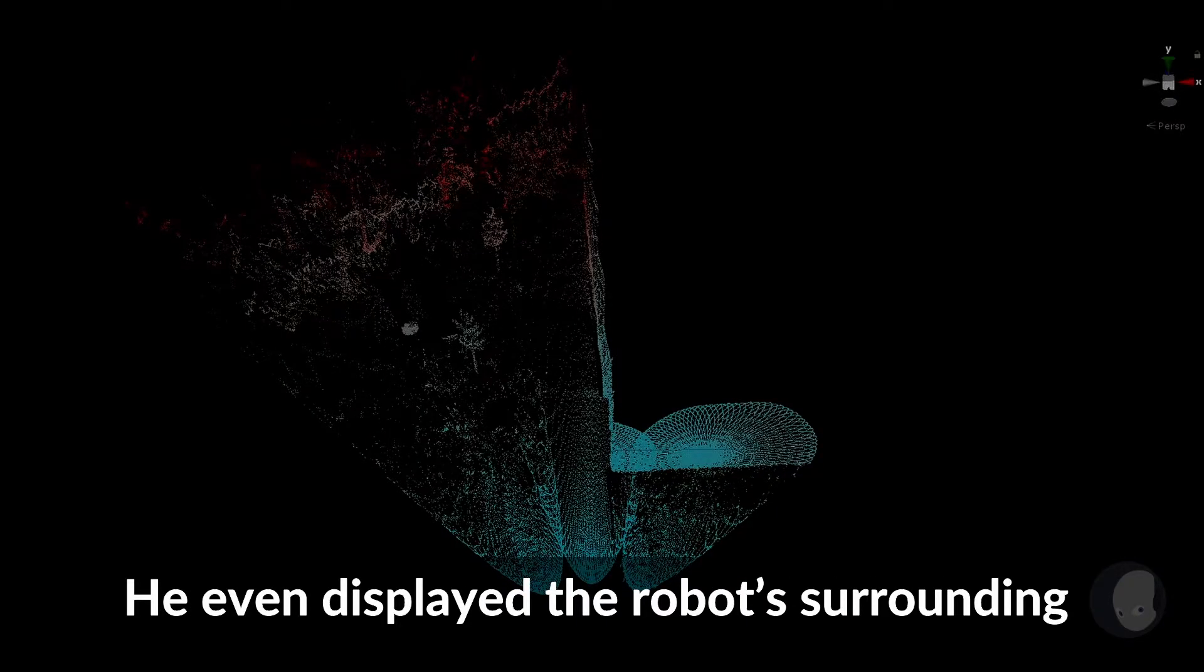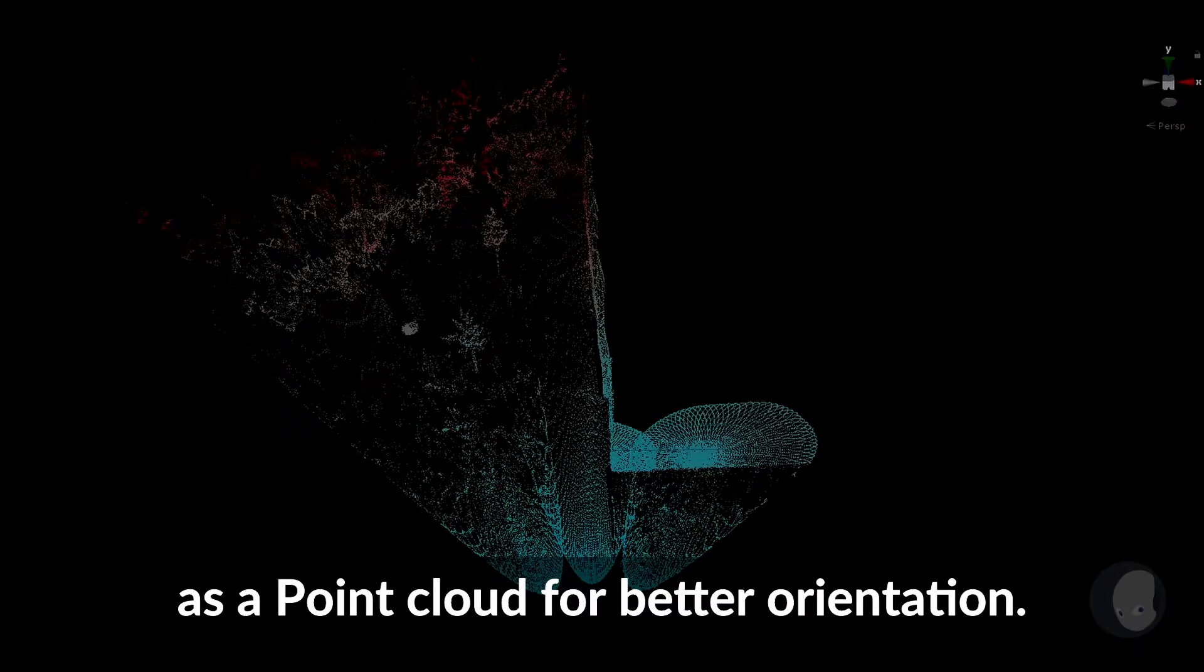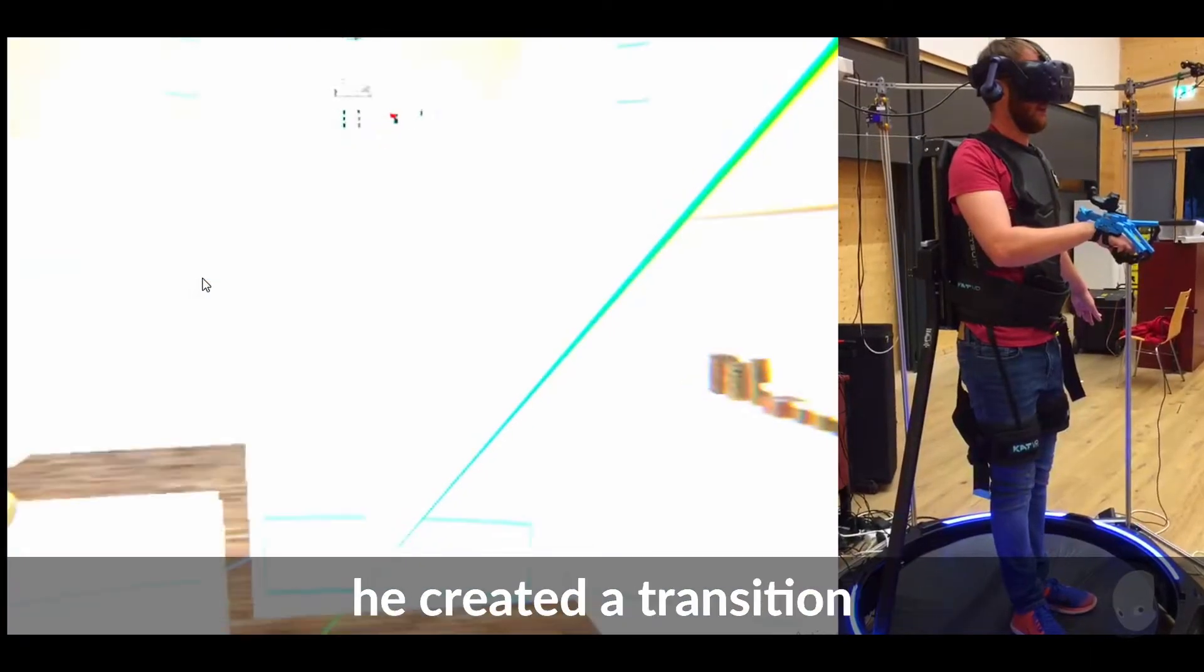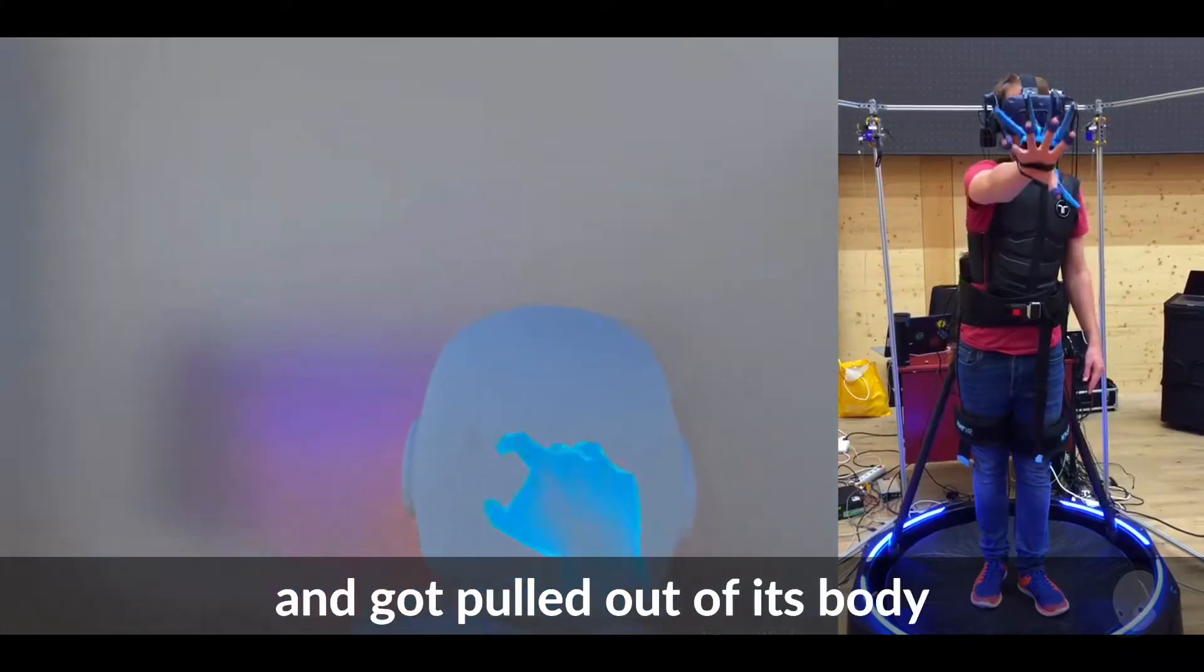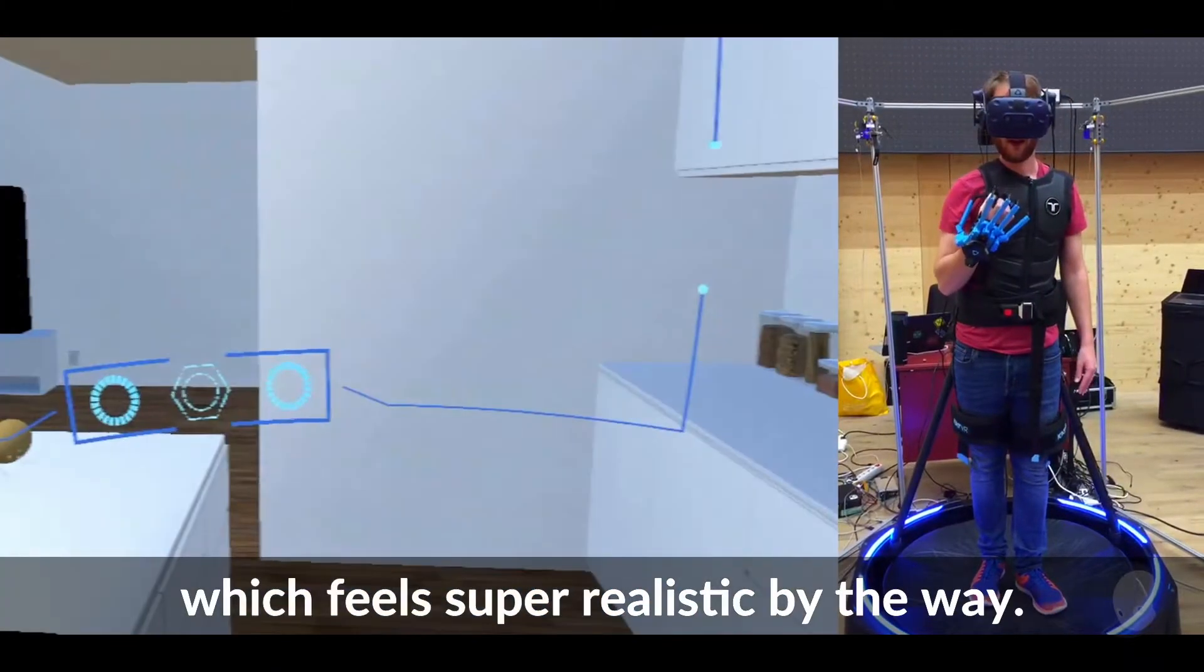He even displayed the robot's surroundings as a point cloud for better orientation. For the more advanced settings, he created a transition where he frees the robot and got pulled out of its body, which feels super realistic by the way.